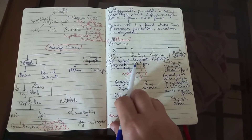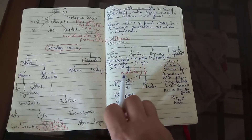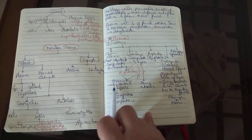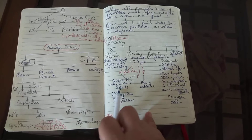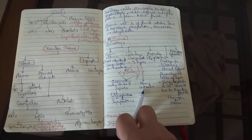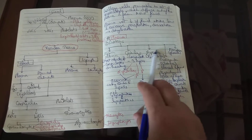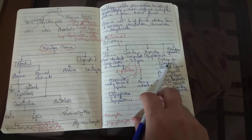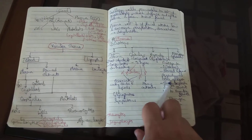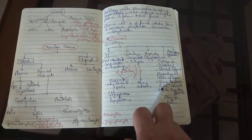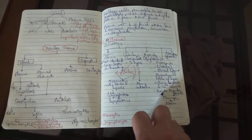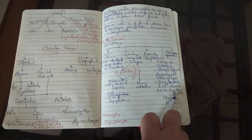Globulins also coagulate on heating and are of three types: alpha globulins, beta globulins, and gamma globulins. Alpha and beta globulins are associated with carbohydrates and lipids, resulting in the formation of glycoproteins and lipoproteins, whereas gamma globulins form the antibodies. Properdin is a gamma globulin. Prothrombin is also a globulin, stored and formed in the parenchymal cells of the liver.